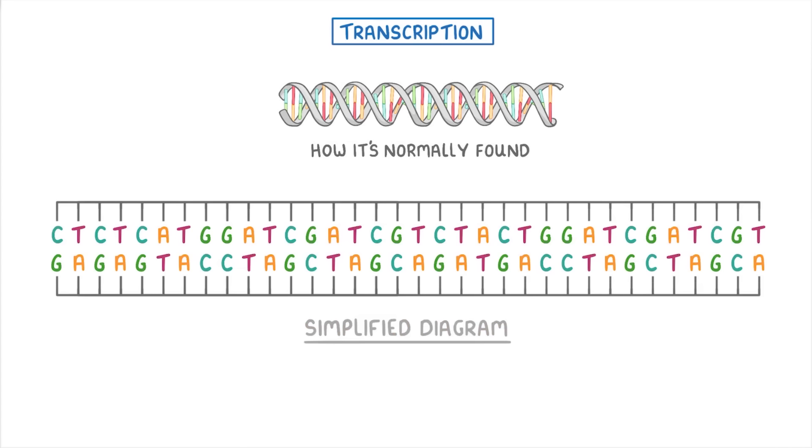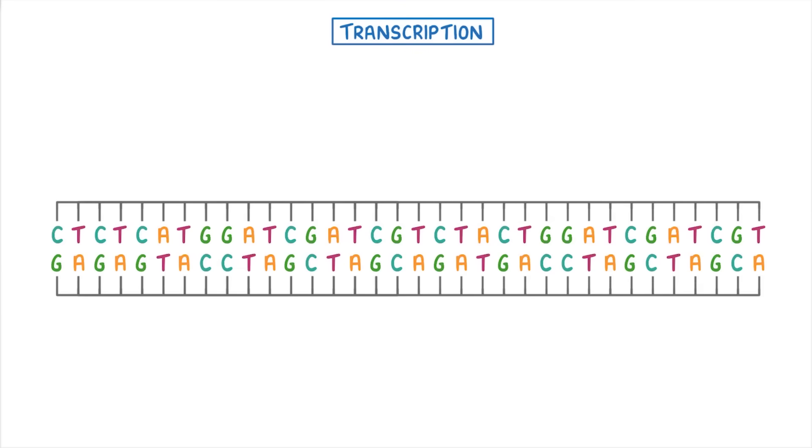And we're showing the bases as their letters. So A for adenine, T for thymine, and so on. For the sake of our example, let's say that this region here, between these two lines, is the gene that we want to copy, even though in real life genes are normally much bigger than this.